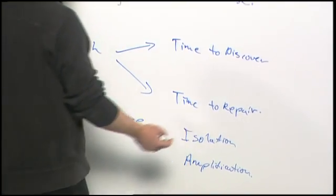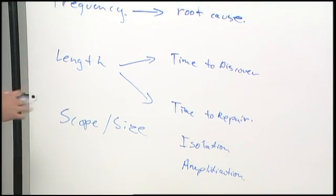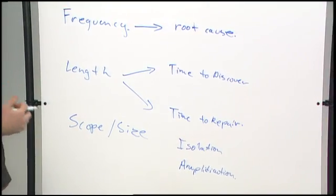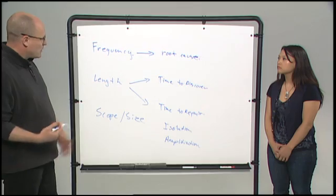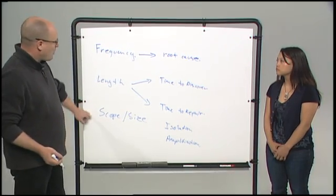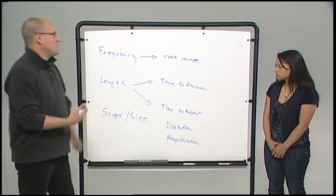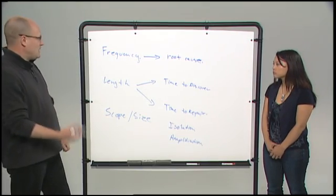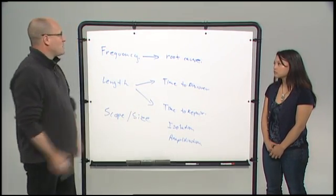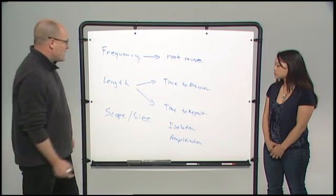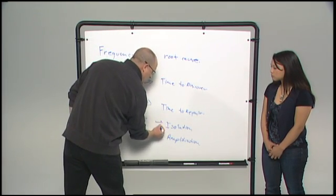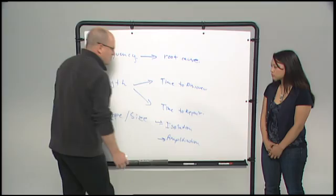But when you're doing that, you want to do it in a way that doesn't create the potential for taking down everybody. Not only because it makes the amount of downtime greater, but also the bigger the failure, the harder it is sometimes to actually repair effectively. There's only so many resources. There's only so much bandwidth that you have available. So thinking through isolation and amplification are key parts.